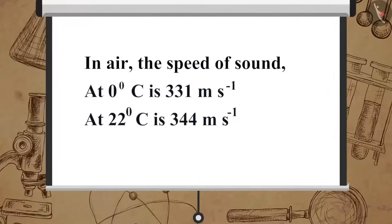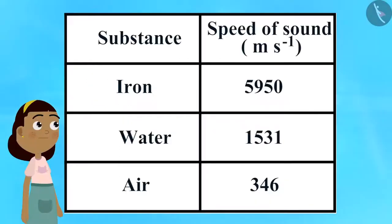In air, the speed of sound at 0 degrees centigrade is 331 meters per second, and at 22 degrees centigrade is 344 meters per second. Now, have a look at this table, which shows the speed of sound in different mediums at 25 degrees centigrade.